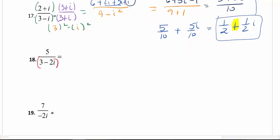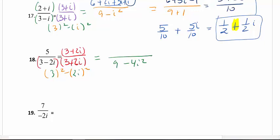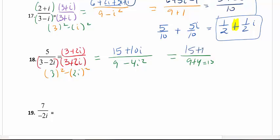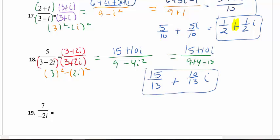Looking at number 18, I'm going to put parentheses around any binomial and multiply by its conjugate so that it fits a difference of squares in the denominator. That gives me 9 minus 4i squared in the denominator, which is 9 plus 4 equals 13. In the numerator, I distribute because I know I'll need to separate the parts: I get 15 plus 10i. I split it up — that is the goal in this section, to separate into real plus imaginary. If you leave it over 13 in one piece, it will be marked wrong.